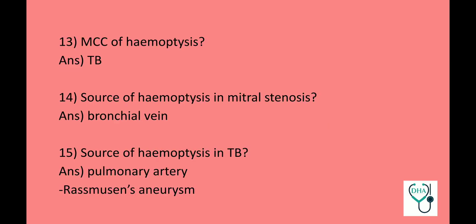Most common cause of hemoptysis overall: tuberculosis. Source of hemoptysis in mitral stenosis: bronchial vein. Source of hemoptysis in tuberculosis: pulmonary artery — this is known as Rasmussen's aneurysm. This is a very famous MCQ and also a very famous viva question for university exams.